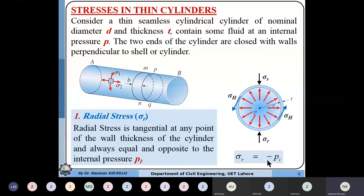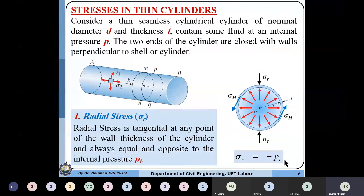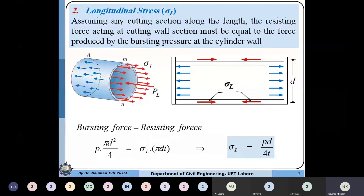The radial stresses are always compressive — this negative sign indicates that radial stresses equal the internal pressure in magnitude and are compressive in nature. They tend to reduce the thickness, but are perfectly balanced and thus ignored. These are the radial stresses acting along the radius direction. Next, we want to determine the longitudinal stresses.